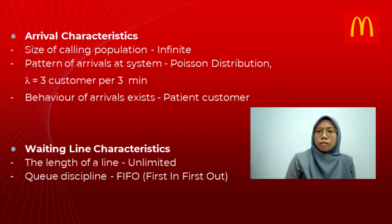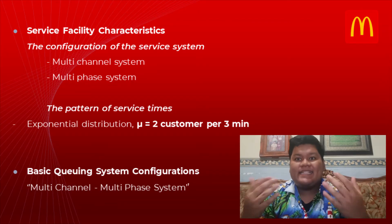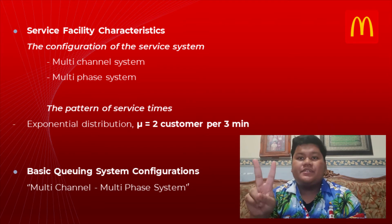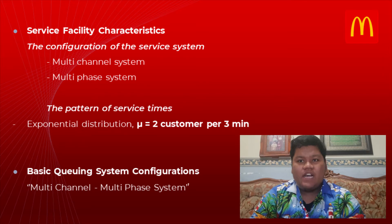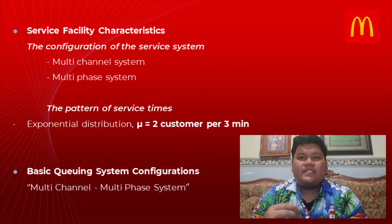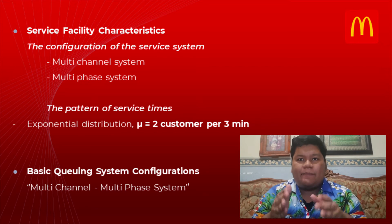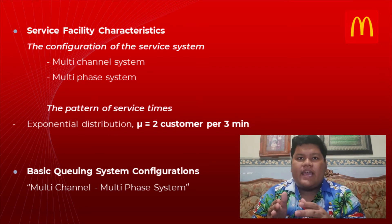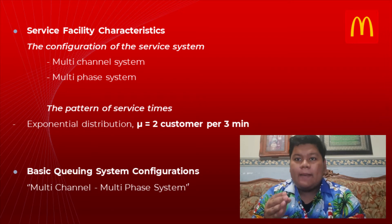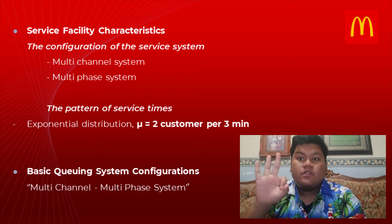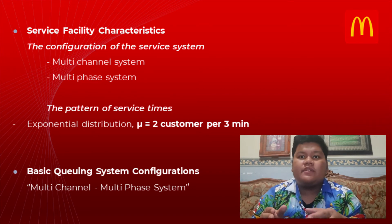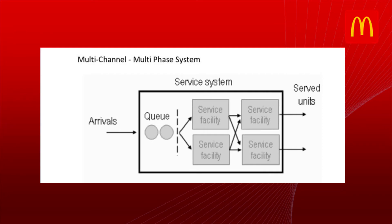For the service facility characteristics, there are two configurations: the number of channels and the number of phases. It is a multi-channel and multi-phase system. The pattern of service time follows the exponential distribution, where mu equals two customers per three minutes. For the basic queuing system configuration, it is a multi-channel to multi-phase system.